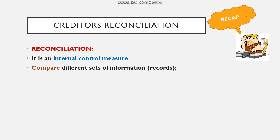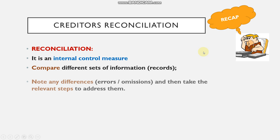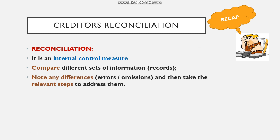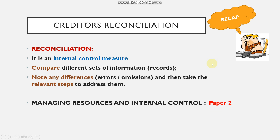In some cases it's the records of the firm or the business, and in other cases we also need to look at information we receive from other service providers such as the bank, or in relation to creditors reconciliation, the statements we receive from suppliers. Once we've compared the information, we note the differences — there could be errors or omissions — and then we take relevant steps to address them. This topic falls under managing resources and internal controls, forming part of paper two in the final examination.